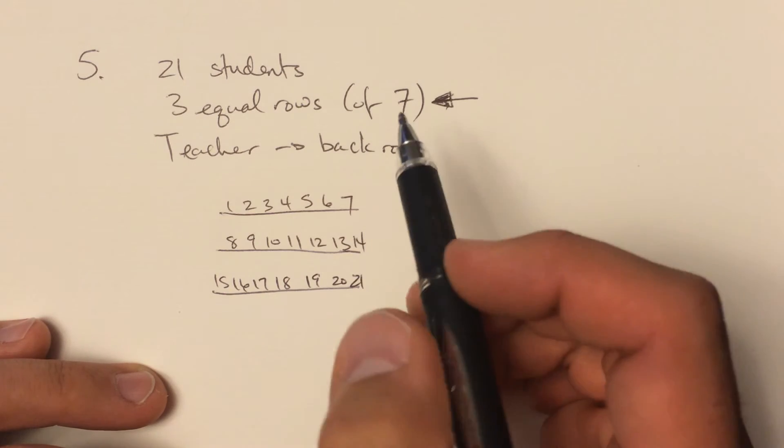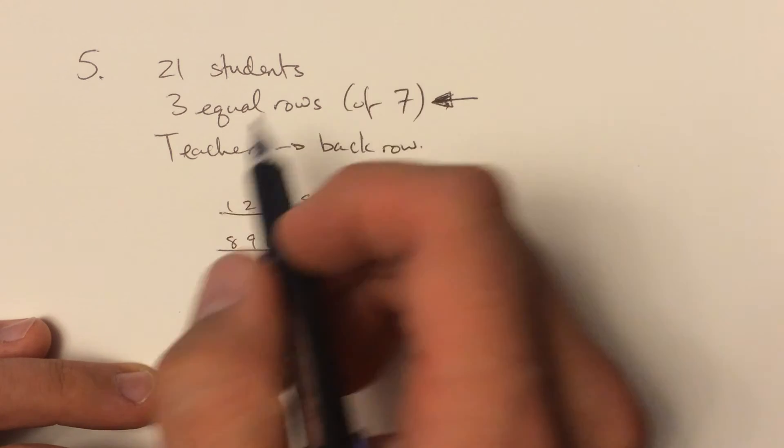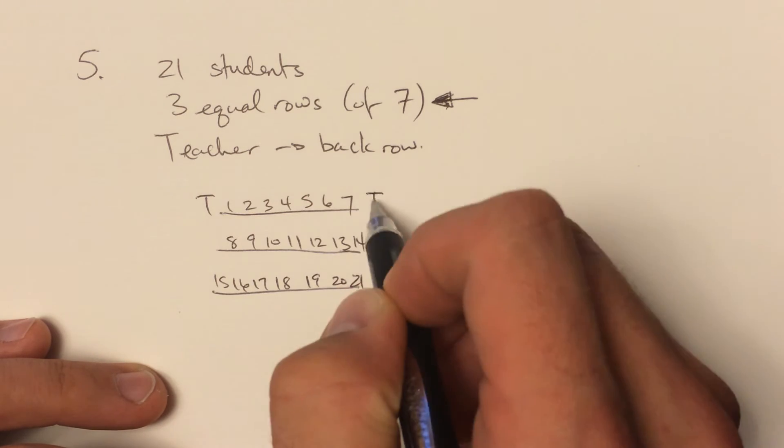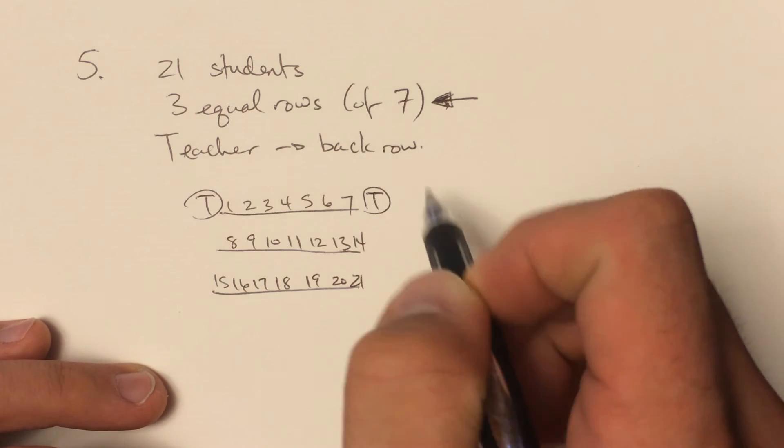And there you have 21 positions. And then the coach can either be, or certainly the teacher, there was a coach question just like this, can be here or the teacher can be there in one of those two locations.